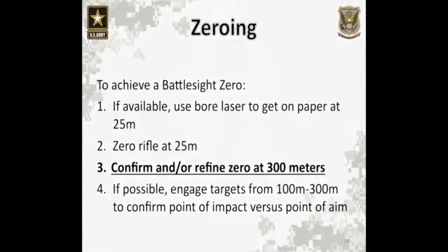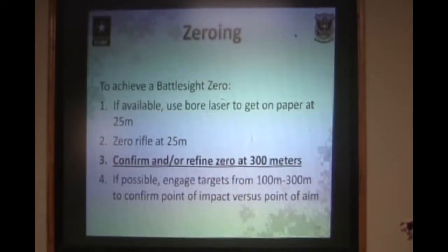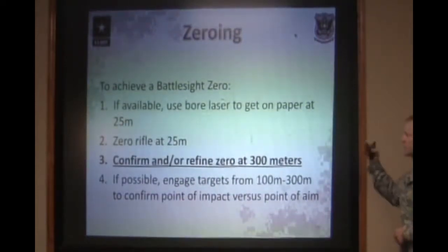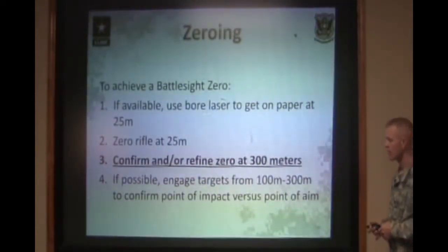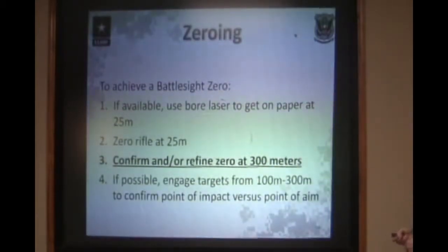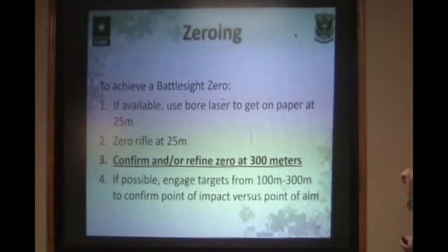To achieve a battle sight zero, if you're able to, you can use a bore laser to basically get the sights lined up so they're on paper at 25 meters. This keeps you from going out to the 25-meter range, firing your first group, and not being on paper. Once you get to the 25-meter zero range, you have to zero that rifle at 25 meters — meaning you manipulate your sights to where your point of aim is center mass on the target and your groups are coming up center in the silhouette.